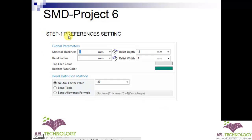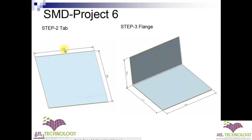Step 1: Preference settings. Based on the drawing and the component, we will be entering values of material thickness, bend radius, relief depth, relief width, and finally the K factor. Once that is done, we will start with the tab of rectangle 127 by 129, and after that we will be creating a flange of the entire length and entire width with height 76.2.